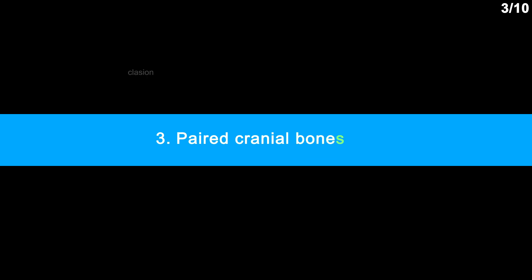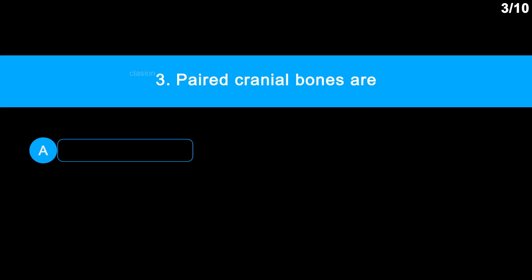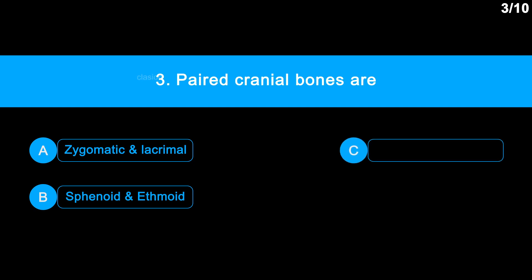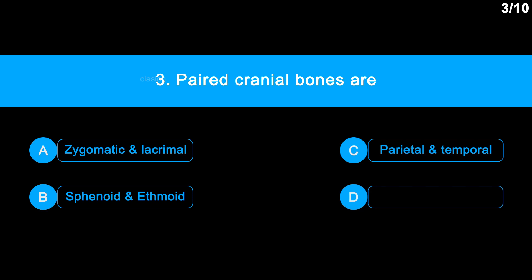Question number 3. Paired cranial bones are: Option A: Zygomatic and lacrimal. Option B: Sphenoid and ethmoid. Option C: Parietal and temporal. Option D: Frontal and occipital.